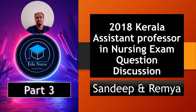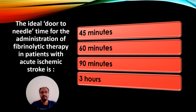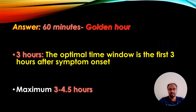Let us go to the first question for today. The ideal door-to-needle time for administration of fibrolytic therapy in patients with acute ischemic stroke is: 45 minutes, 60 minutes, 90 minutes, or 3 hours. The correct answer is 60 minutes, also called the golden hour. The optimal time window is the first three hours after symptom onset, and the maximum time is three to four and a half hours.